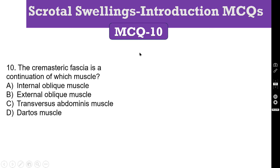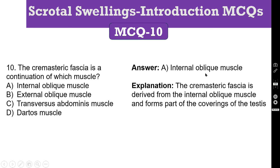MCQ number 10: Cremasteric fascia is a continuation of which muscle? A. Internal oblique muscle, B. External oblique muscle, C. Transversus abdominus muscle, D. Dartos muscle. The correct answer is Internal oblique muscle. The cremasteric fascia is derived from the internal oblique muscle and forms part of the coverings of the testis. External oblique gives rise to the external oblique aponeurosis. Transversus abdominus muscle gives the internal spermatic fascia. Dartos muscle is a covering of the scrotum, not a content.